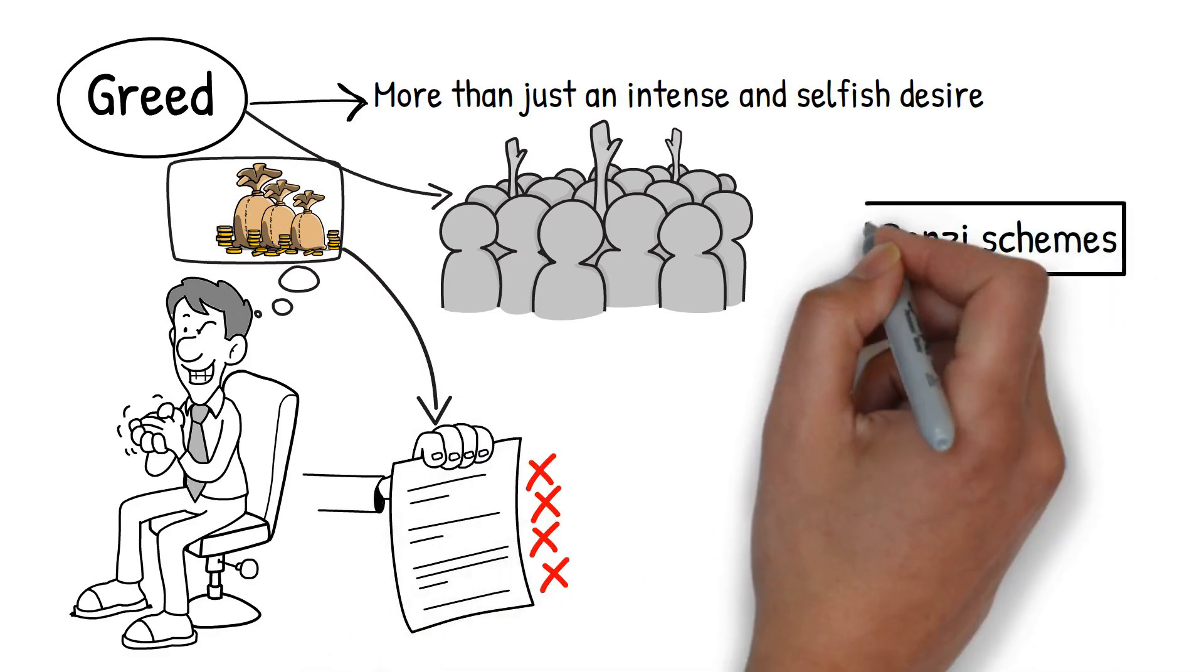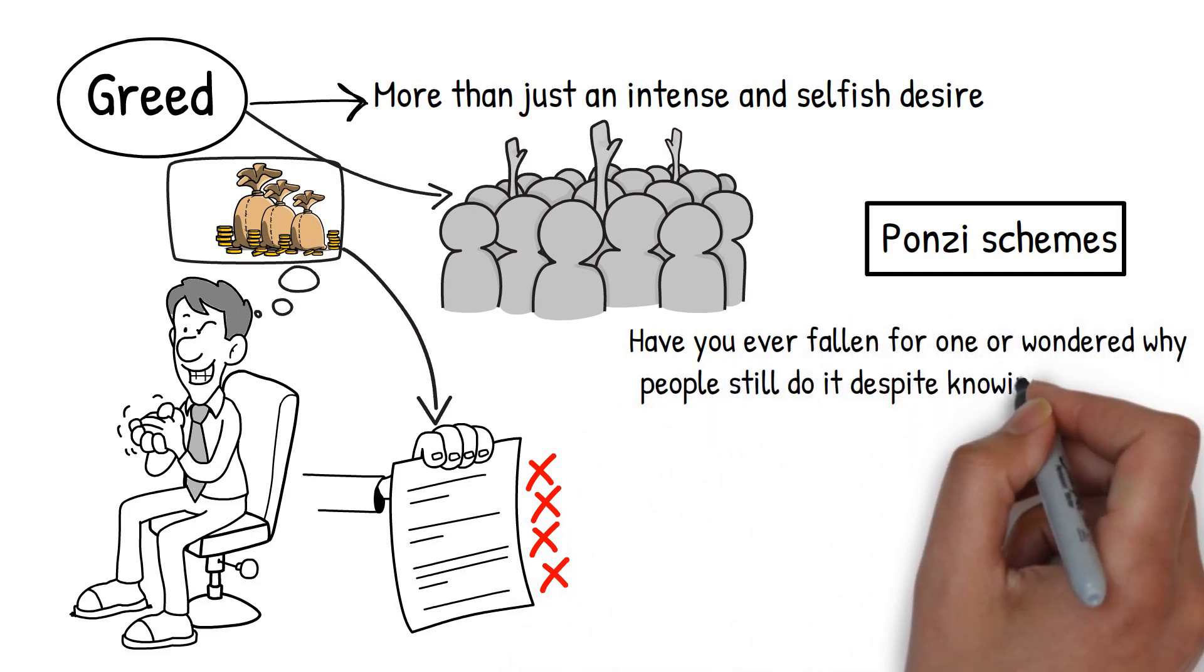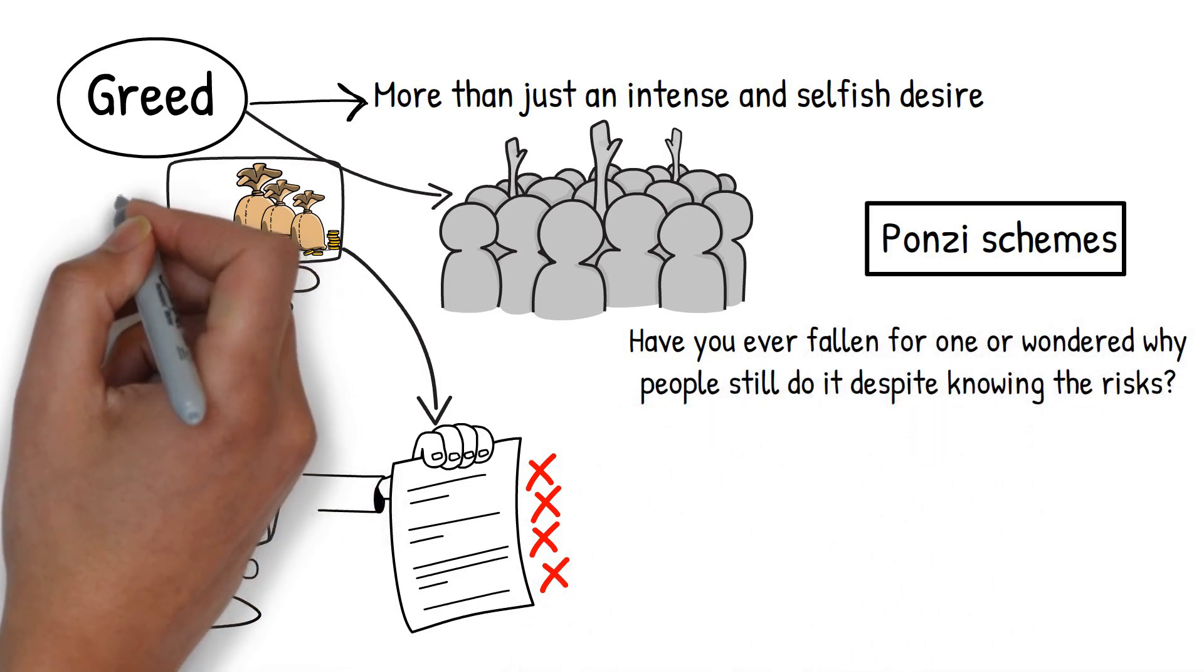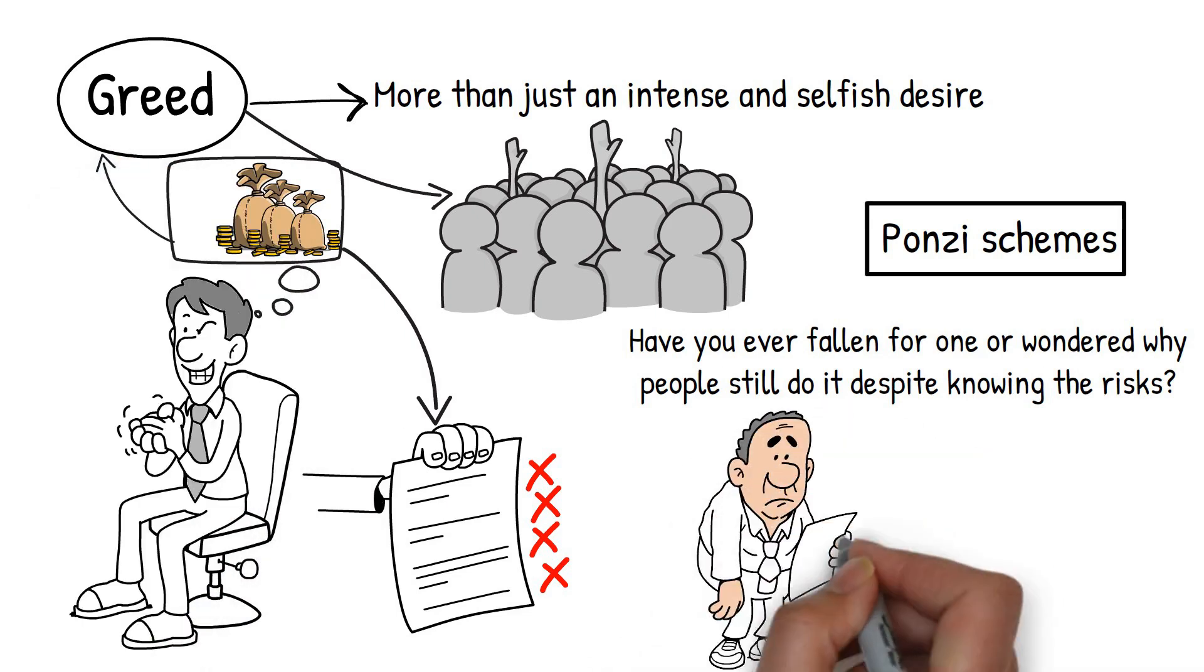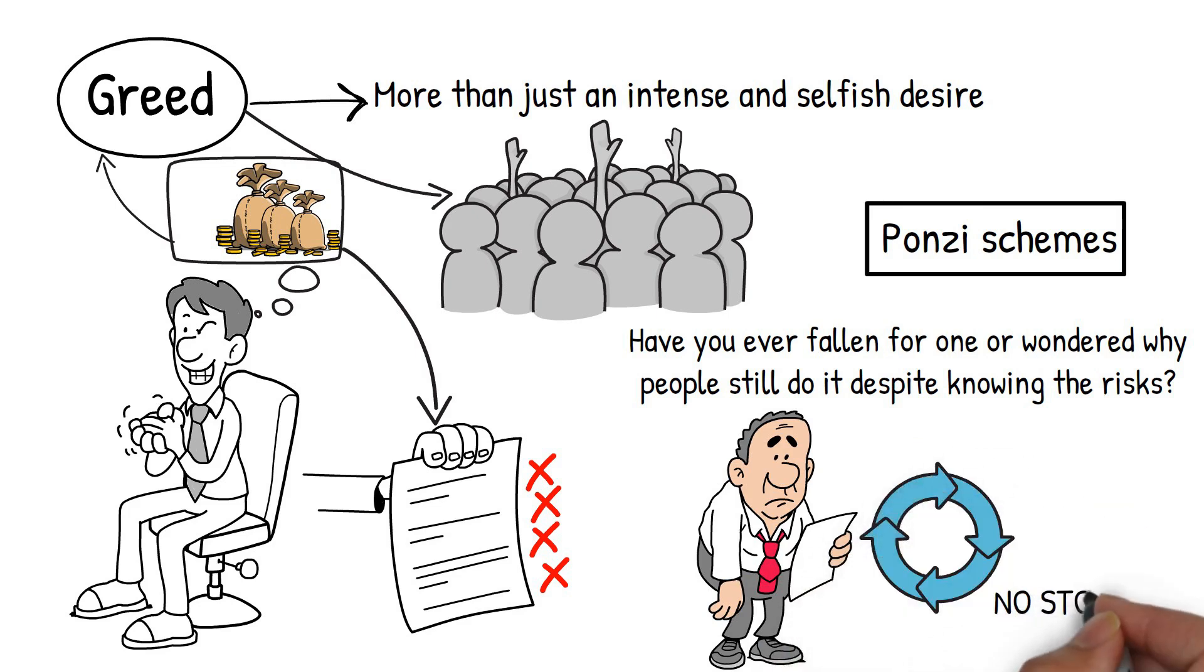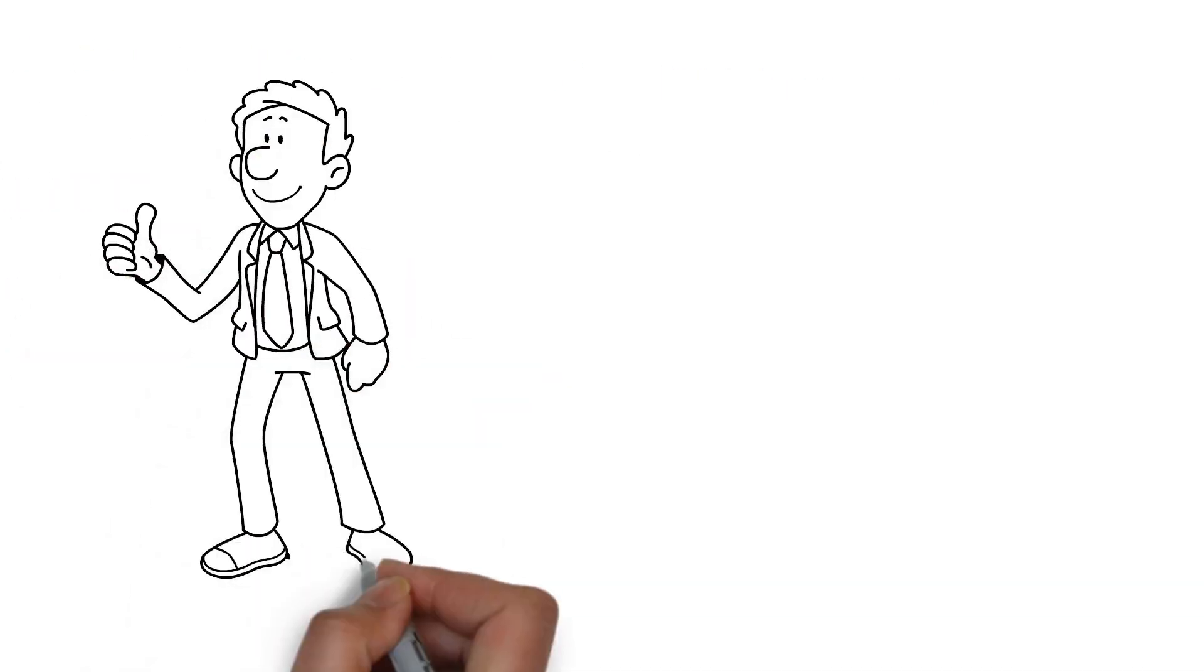Think about Ponzi schemes. Have you ever fallen for one? Or wondered why people still do it despite knowing the risks? It's often because their desire for more money is driven by greed. When greed drives your financial decisions, it can cause more harm than good. You might find yourself stuck in an endless cycle, where no amount of money feels like enough. Greed just leads to more greed. And it never stops.